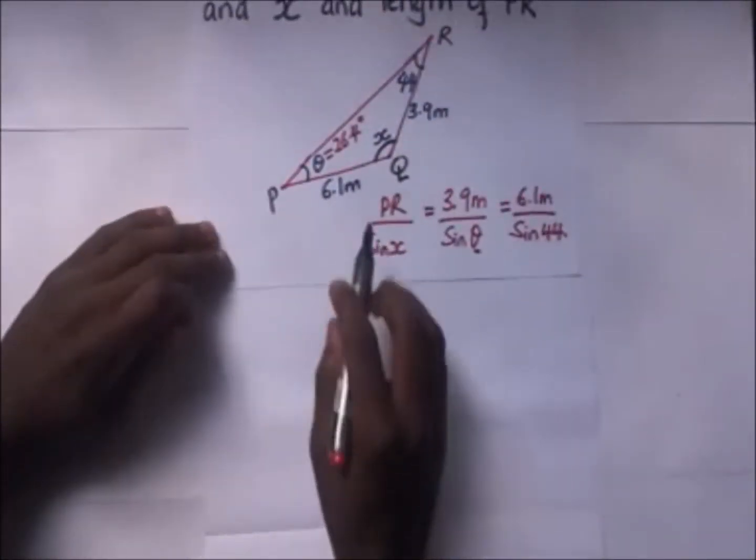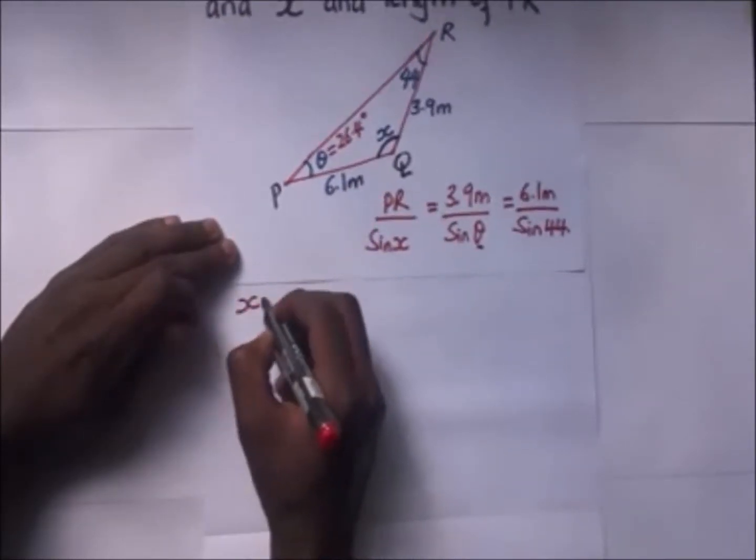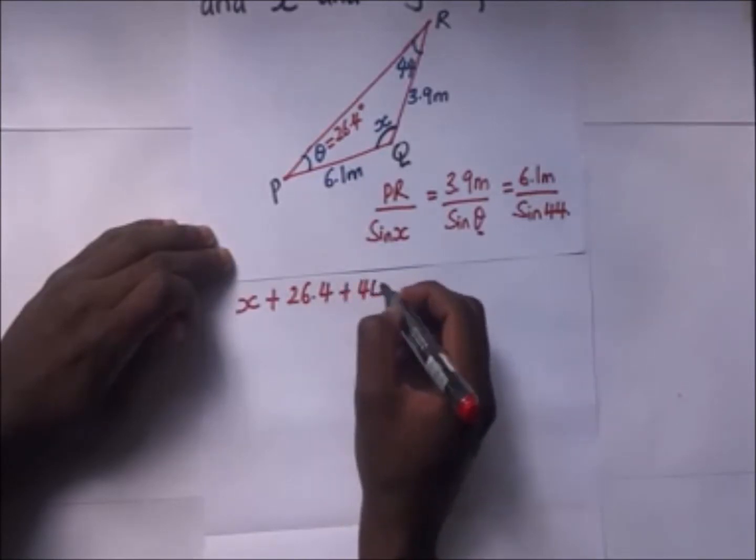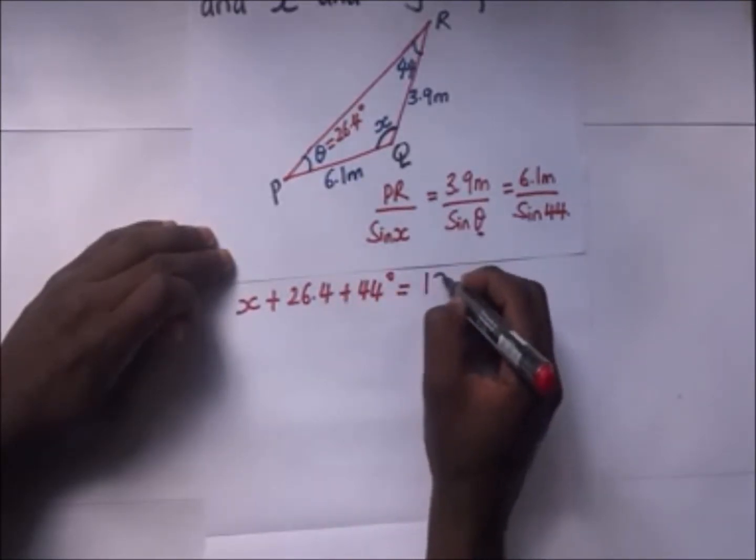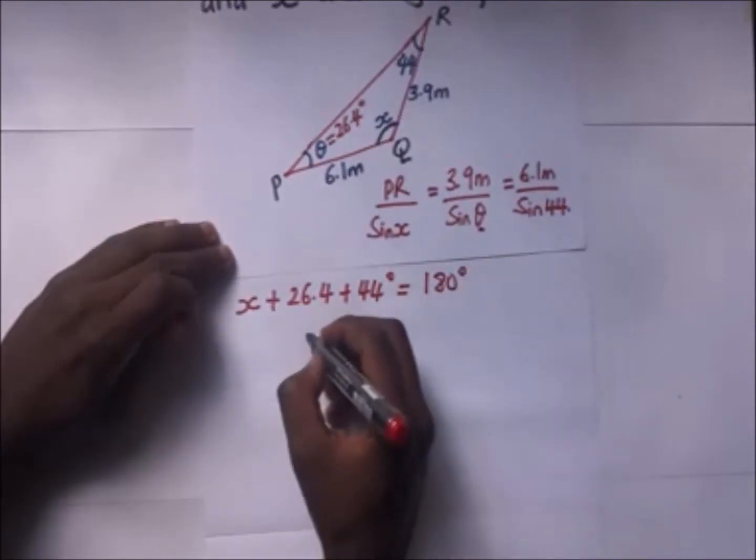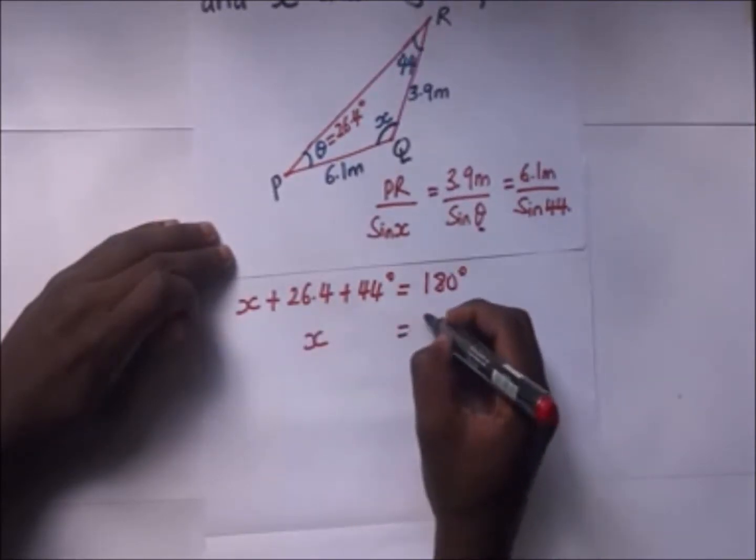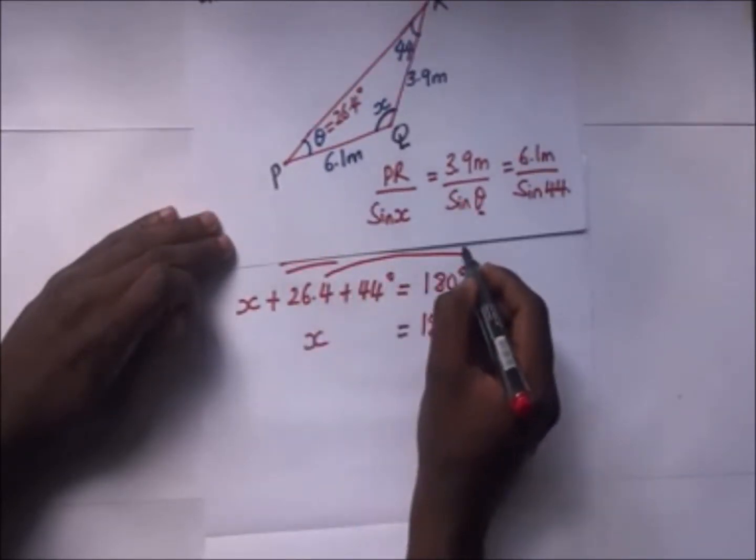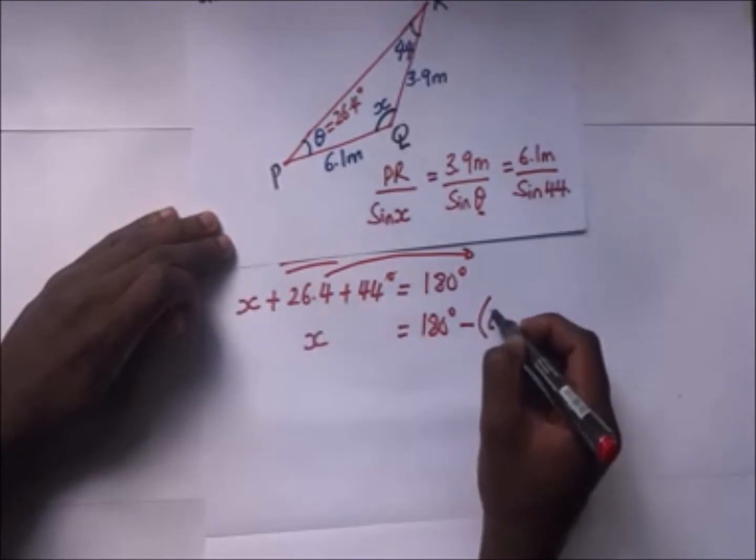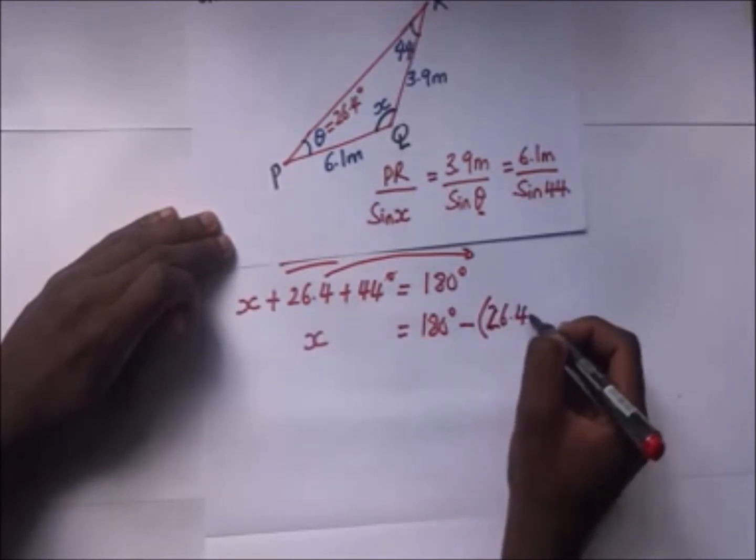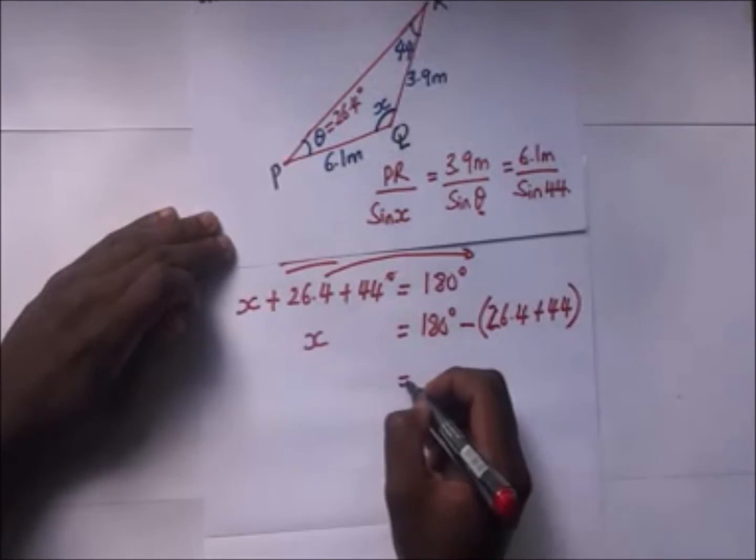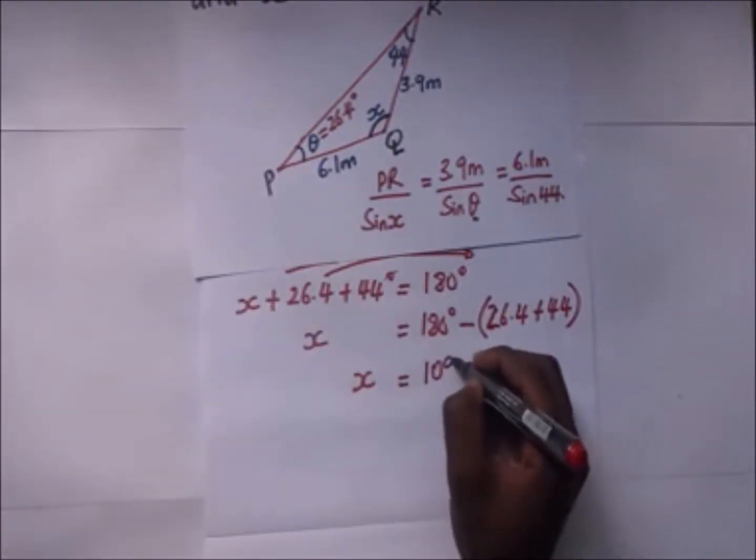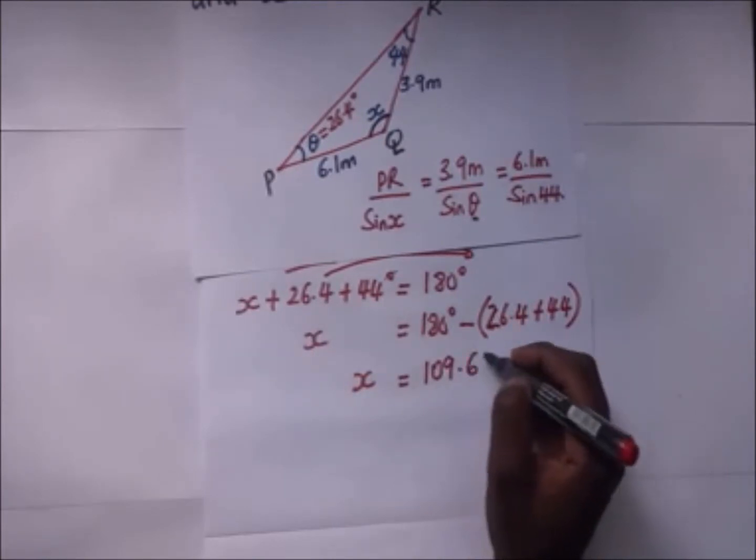So to get this value of x we say it is x plus 26.4 plus 44 degrees is giving us 180 degrees. So our value of x will still be 180 degrees minus this, so it's minus 26.4 plus 44. And when we compute it, our value of x is 109.6 degrees.